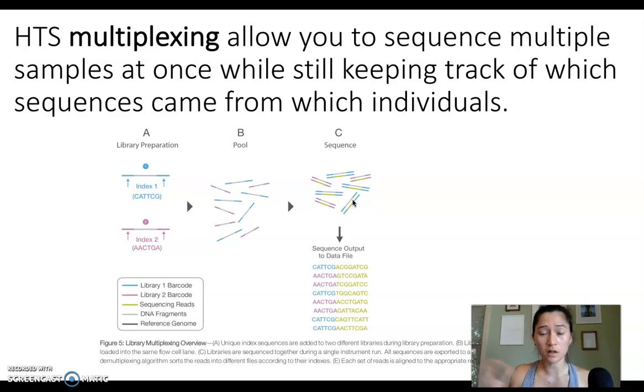Because they're all mixed together, when you get your data file output—which is just these strings of hundreds, thousands, and millions of nucleotides—all of your reads from both samples one and two are combined and mixed together. When you initially get your sequencing data, you don't know which reads came from which sample.